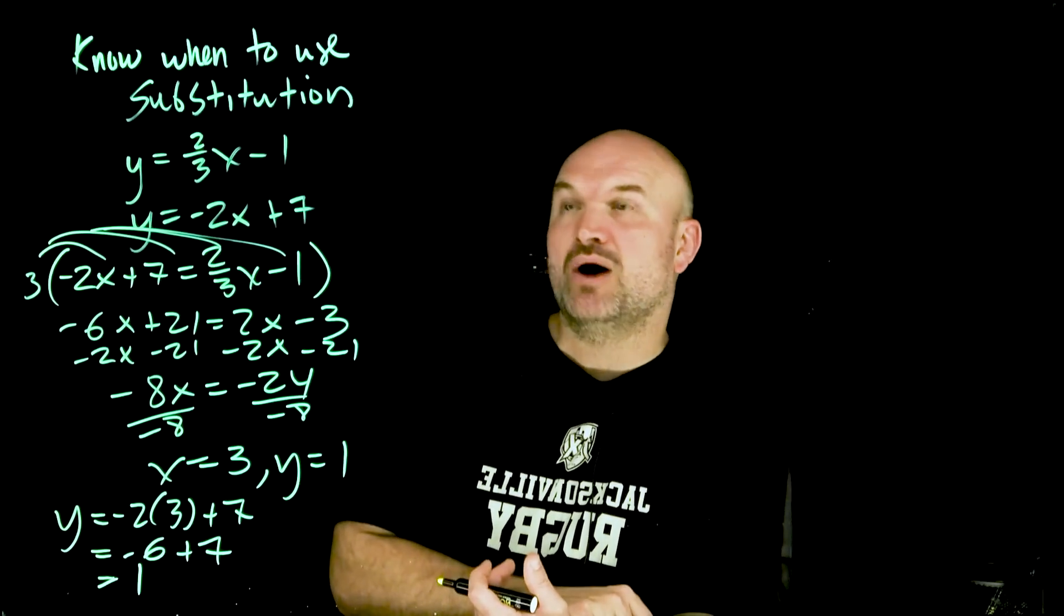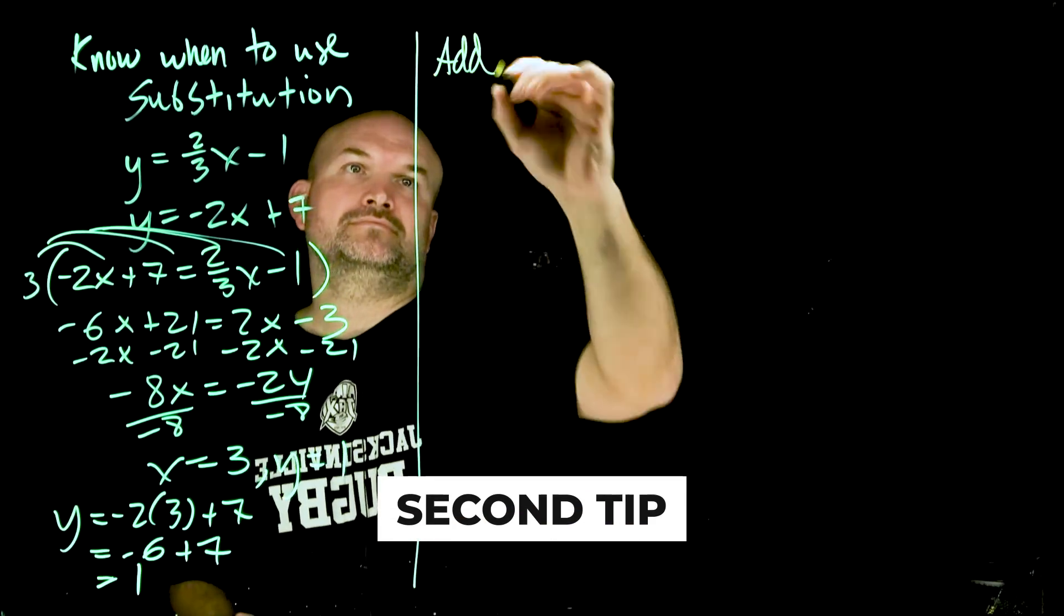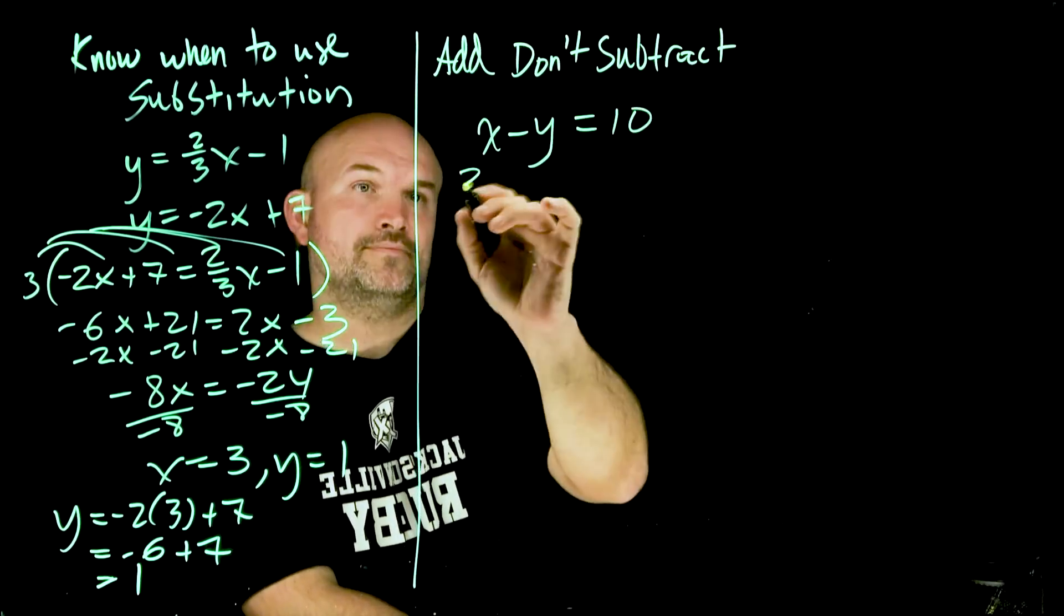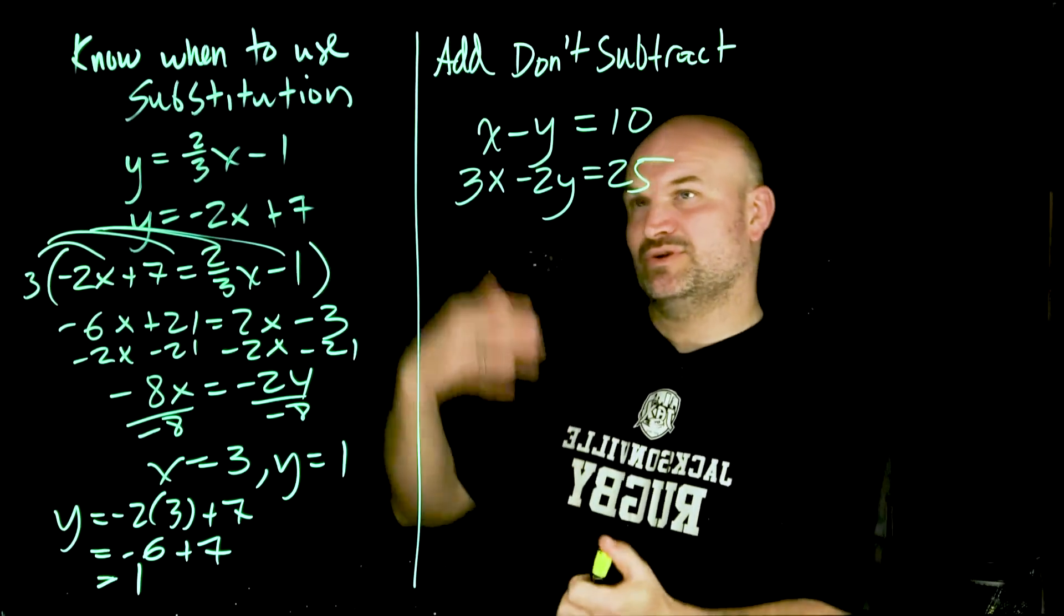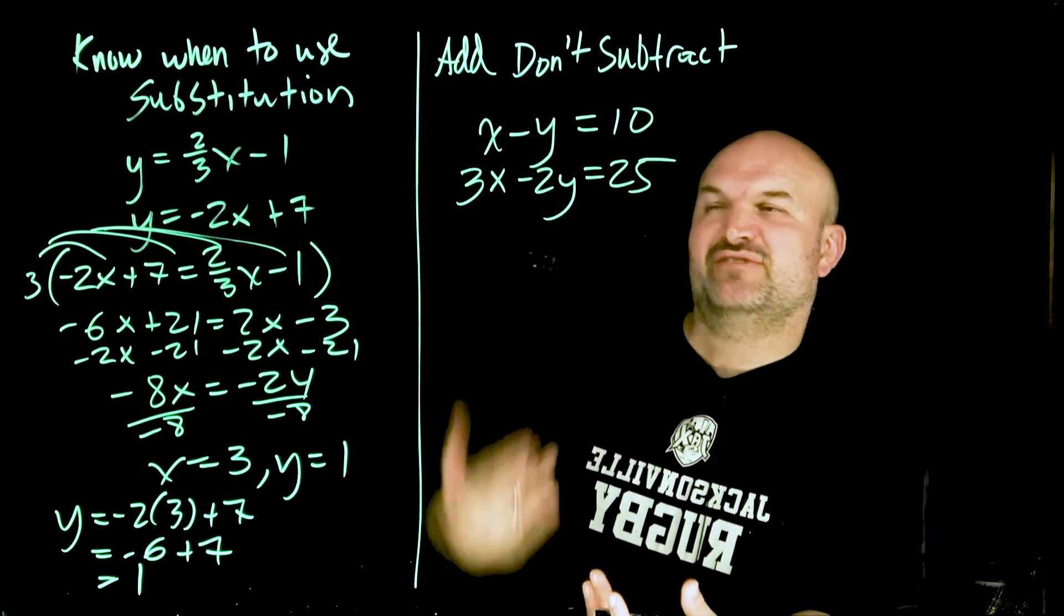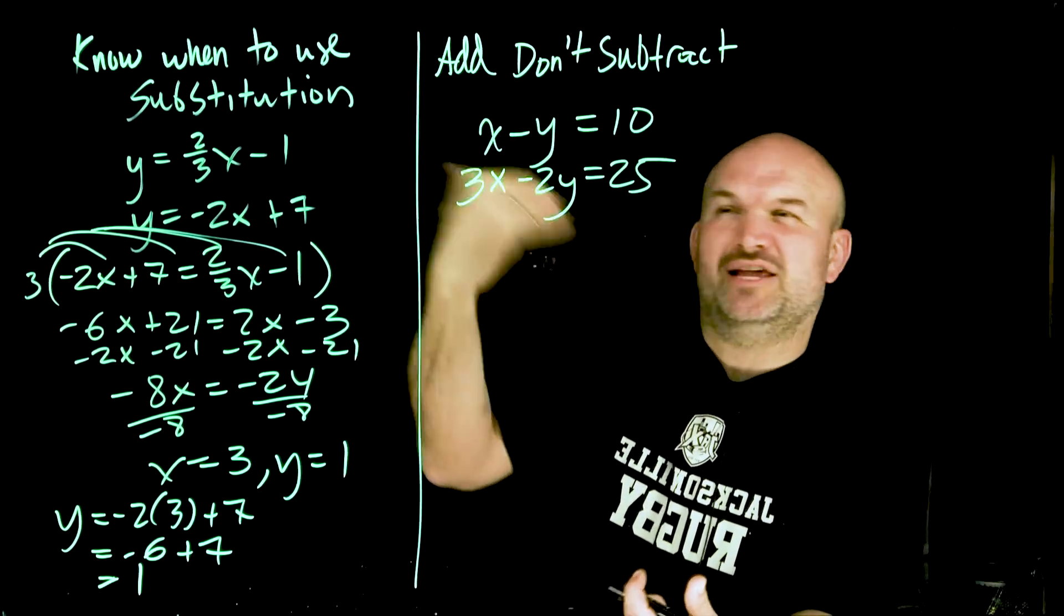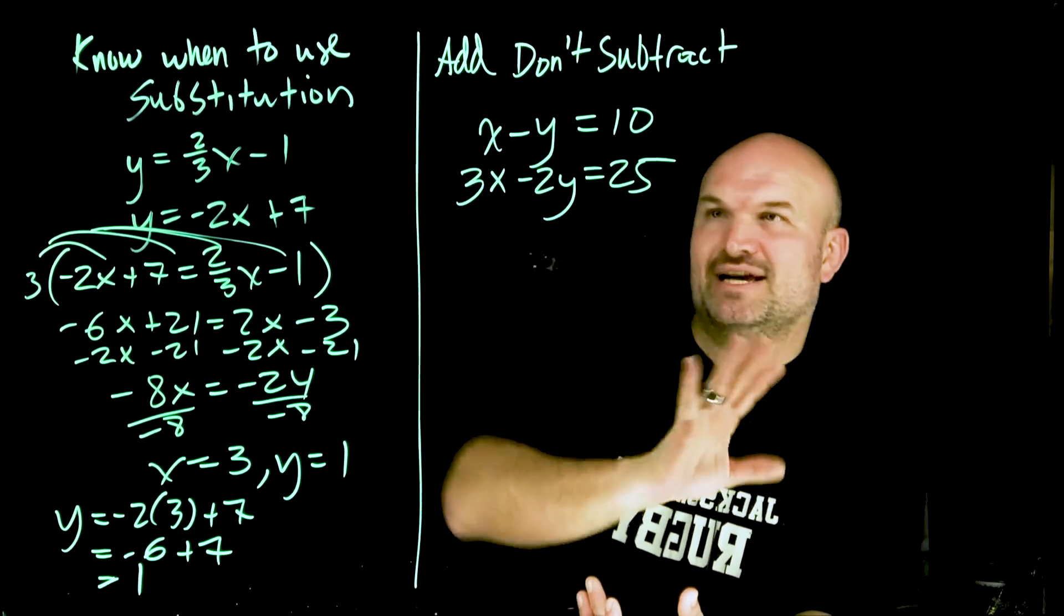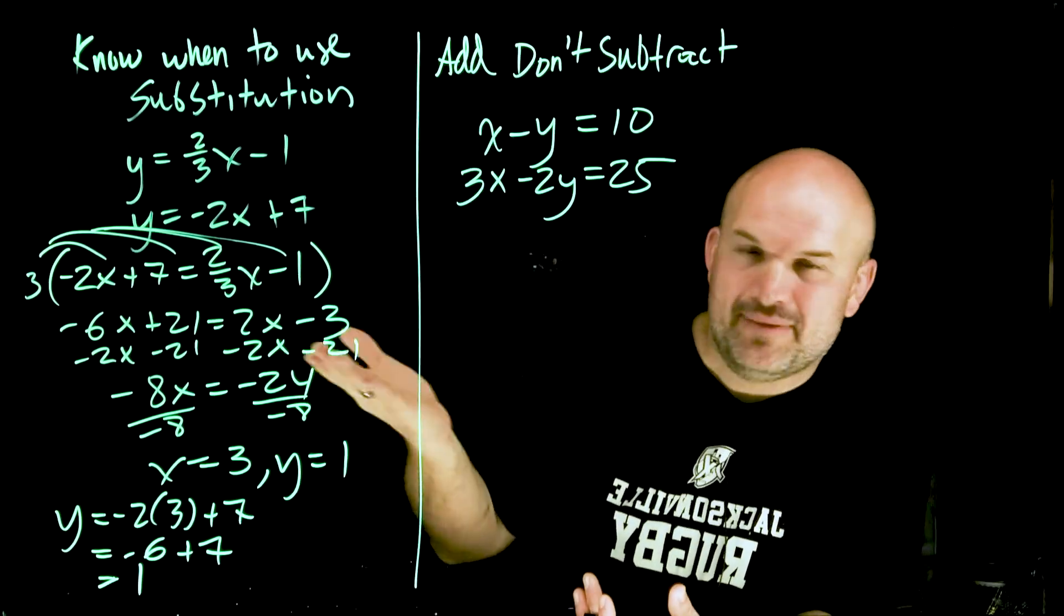Now let's get over to our next tip which is to add, don't subtract. Okay so now technically when we're doing substitution a lot of times I used to say use substitution whenever you have a coefficient of your variable as 1 or -1. So this one you could actually use substitution, it wouldn't be that bad. You don't have a variable isolated but to isolate for x I just need to add y to the other side, it's not that bad.